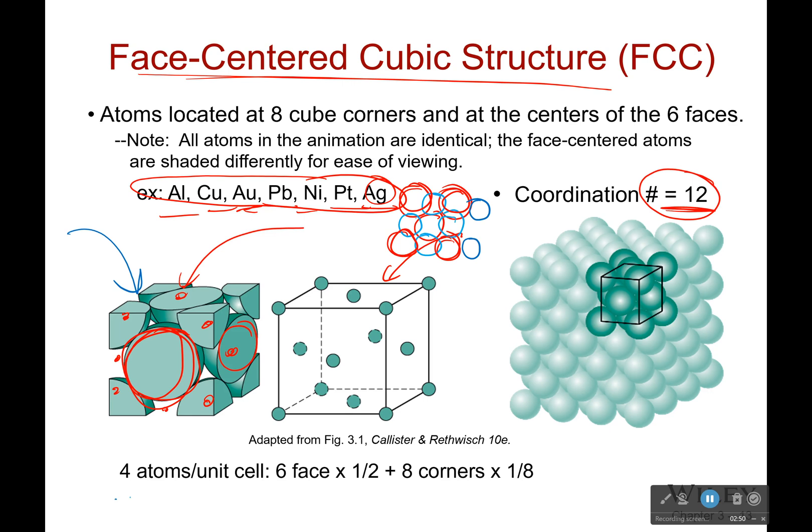Now, how many atoms do we have in our unit cell? Well, there are four. We have six faces and each of those holds half an atom if we're doing this little cube. We have eight corners, each of those holding an eighth of an atom. So six times a half is three plus eight times an eighth, which is one. So that would be equal to four.